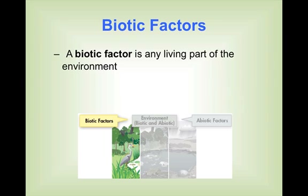There are things called abiotic and biotic factors. A biotic factor is any living part of an environment. This picture focuses on the birds, the grass, the tall river grass, the fish, and the trees — those are all living organisms, they're biotic factors. But things that are produced by living organisms are also biotic factors. So if one of those birds were to die, its carcass would be a biotic factor.